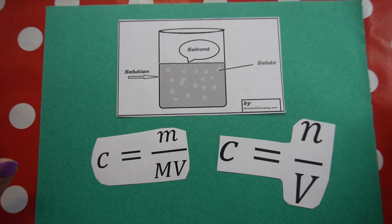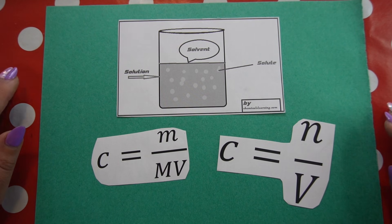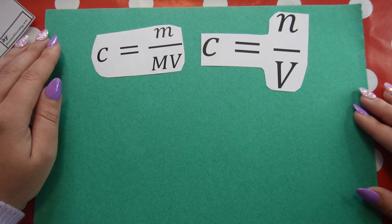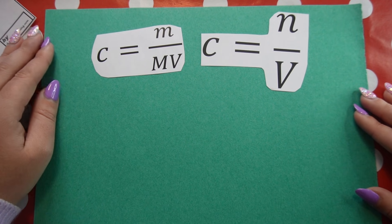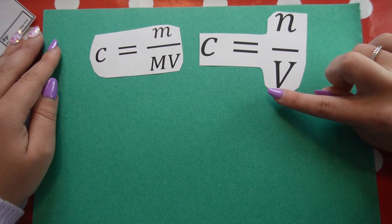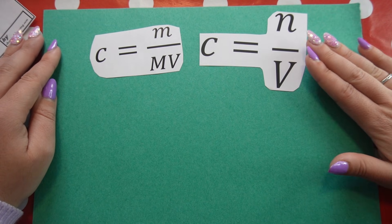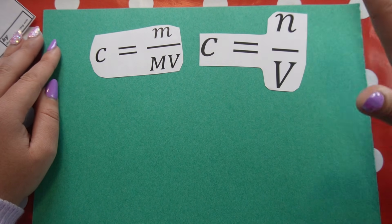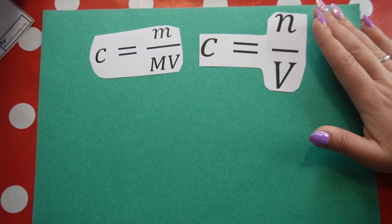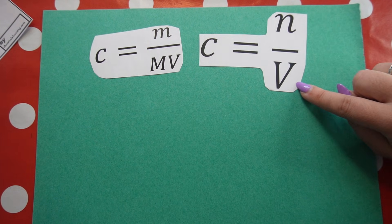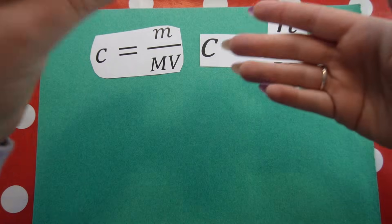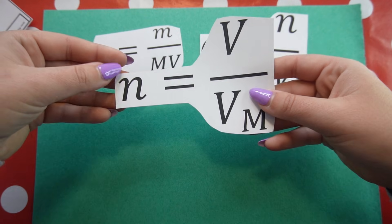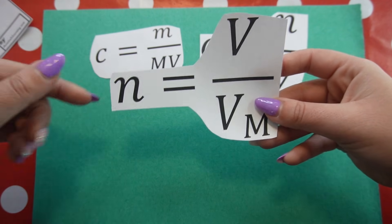They will ultimately get the same answer, and I choose which one to use depending on the information I am given. It's very important to note that if you are asked to work out the volume of a gas at standard temperature and pressure, they are not wanting you to use this formula. This formula is for the concentration of solutions — when we're dealing with a solute dissolved in a solvent. If I want to work out the volume of a gas, I will use a different formula for that. If you want to see a video of me going over that formula, I will link it in the description below.